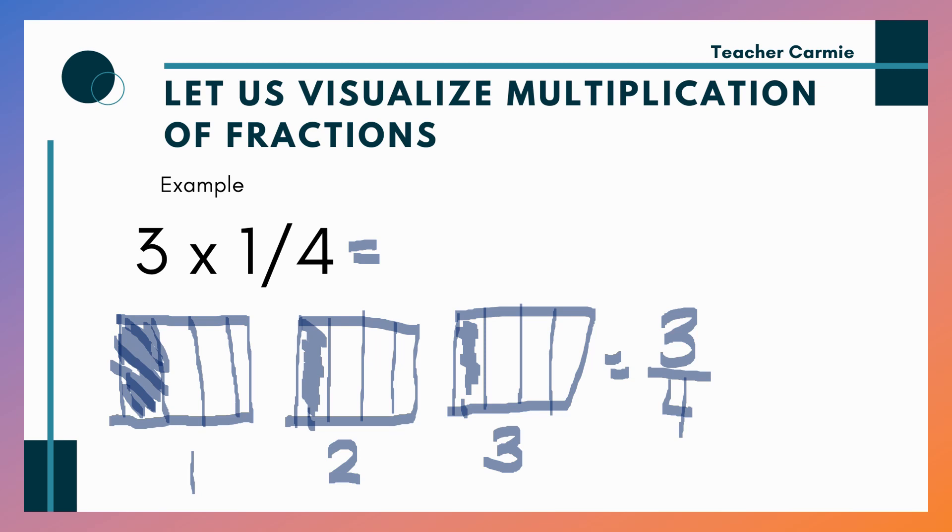Then, ilang bang division every whole figure? So we have 4. So meaning 3 times 1 fourth equals 3 fourth. If we are going to compute, 3 times 1 fourth - ang rule natin, kapag whole number i-multiply sa fraction, we just multiply the whole number to the numerator. So 3 times 1 equals 3. Then, copy the denominator, 3 fourth.